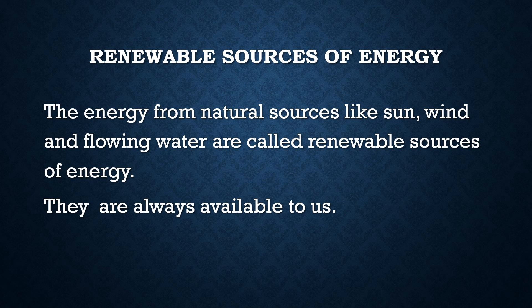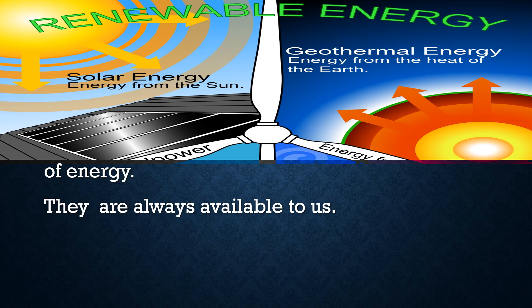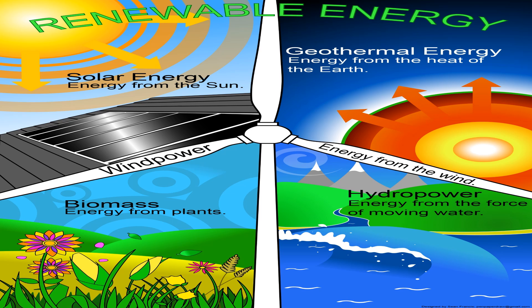Renewable sources of energy: the energy from natural sources like sun, wind, and flowing water are called renewable sources of energy. They are always available to us. In this picture you can see examples of renewable energy — solar energy, wind power, biomass, hydropower, and geothermal energy. That is: energy from the heat of the earth, energy from the force of moving water, energy from the wind, energy from plants, and energy from the sun.